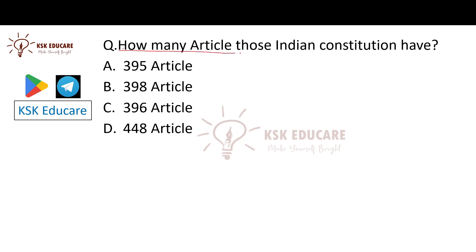Next question: How many articles does the Indian Constitution have at present? Option A is 395 articles, Option B is 398 articles, Option C is 396 articles, Option D is 448 articles.